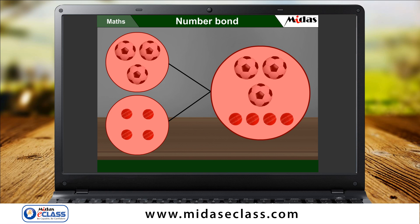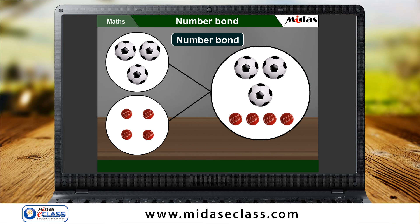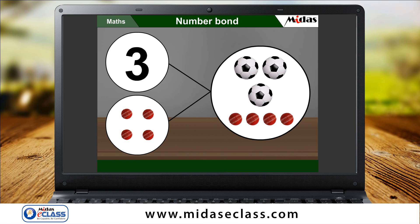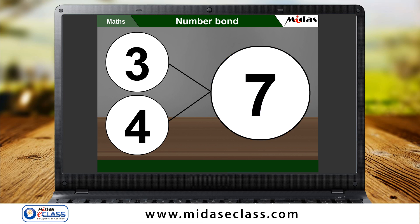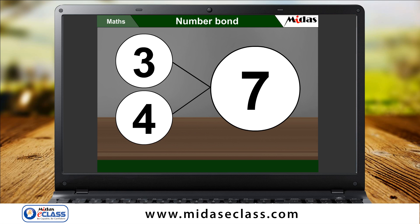Now, let us use the number of balls to make a number bond. Three for this group, four for this group, and seven for the total balls. Here, seven is the whole, and three and four are its parts. Parts three and four add up to give the whole seven. That is, three plus four is equal to seven.